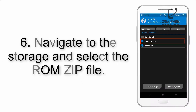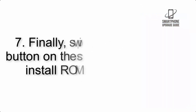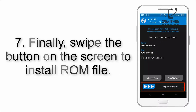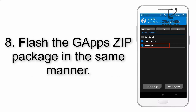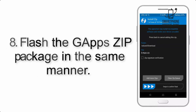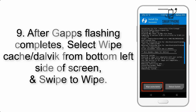Step 5: Go back to the recovery main screen and tap on the Install button. Step 6: Navigate to the storage and select the ROM zip file. Step 7: Finally, swipe the button on the screen to install the ROM file. Step 8: Flash the GApps zip package in the same manner.